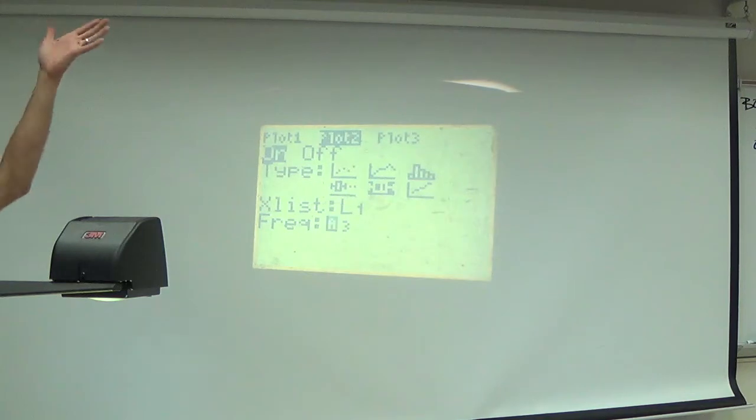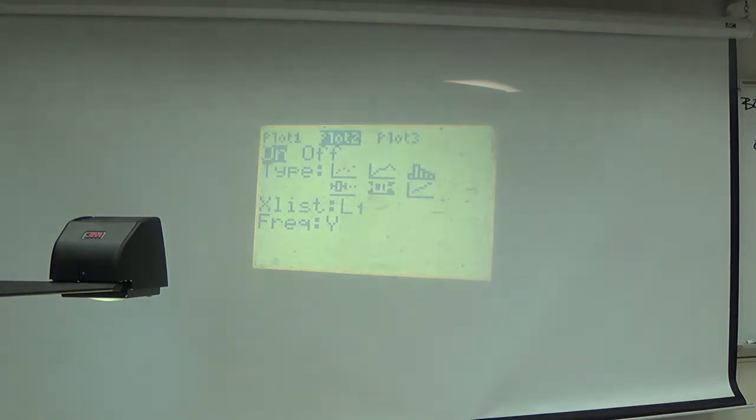But here's, some of you, when you hit the number one, you get a letter Y. Why? Because TI will not fix the bug. So what you have to do is press the alpha button first to turn the alpha mode off and then press one. Fair? It's not fair. That's what we have to do to make it work.